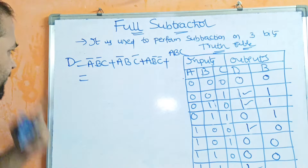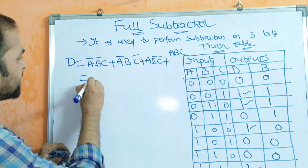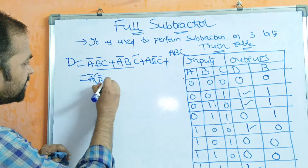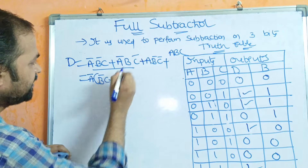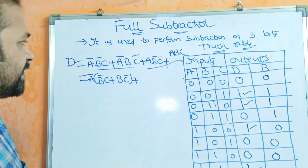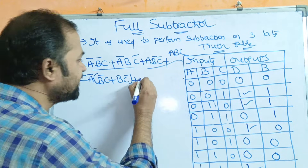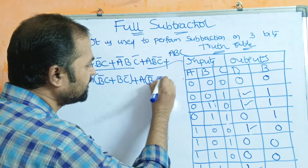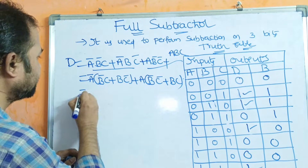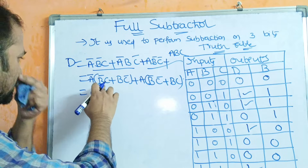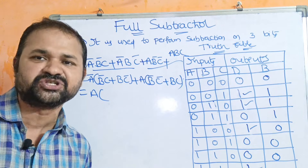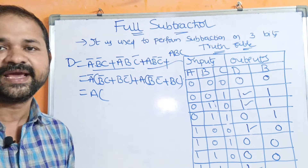If we observe the first two terms, A-bar is common. The remaining terms are B-bar·C + B·C-bar. If we observe the last two terms, A is common, with remaining terms B-bar·C-bar + B·C. This gives us: D = A-bar·(B-bar·C + B·C-bar) + A·(B-bar·C-bar + B·C). The expression B-bar·C + B·C-bar is nothing but the exclusive-OR formula: A XOR B equals A-bar·B + A·B-bar.